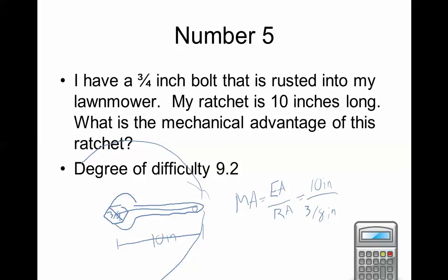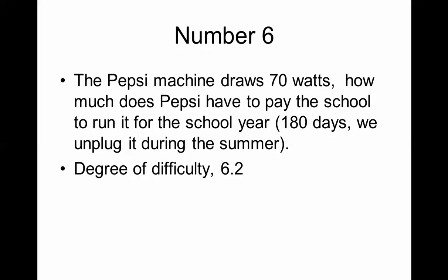The bolt is three-quarters of an inch across, so the radius is three-eighths of an inch, which equals 0.375 inches. So the mechanical advantage is 10 divided by 0.375, which equals approximately 80. This wrench makes me 80 times more powerful than if I just grabbed the bolt head and twisted. Hopefully this helped — remember to use your pause button and try these on your own. Thanks for watching!